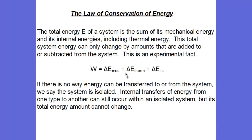The mechanical energy could change, the thermal energy can change, or some other form of internal energy could change — for example, if something gets hot it emits infrared radiation, which is radiated light energy. If there is no way energy can be transferred to or from the system, we say that system is isolated. Internal transfers of energy can occur within an isolated system, but the total amount — the sum of all these categories — will not and cannot change.